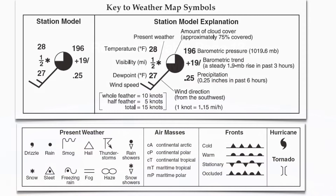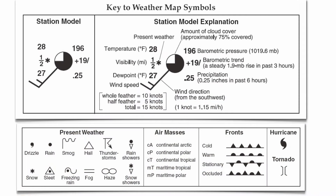Station models are a huge tool for a meteorologist because they give you a lot of information in a really small space. In the reference table at the bottom of page 13, you actually have two station models — one without an explanation and one with an explanation. So any questions you get on this on your Regents, please come to page 13.